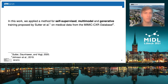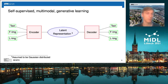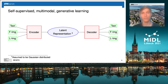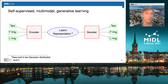The basic idea is to take a sample from this database which contains multiple modalities and encode it into one latent representation, in which a decoder can then reconstruct these multiple modalities. This method is self-supervised because it doesn't need any labels, it is multimodal because we work with three modalities — a text modality and two image modalities — and it is generative because one can sample from this latent representation in order to generate new samples.